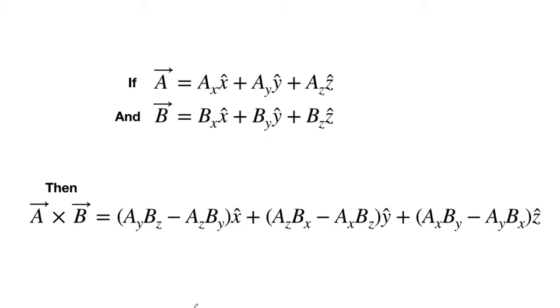Okay, how do we do it in components? Well, if our vector A looks like this and our vector B looks like that, the same way of writing it we've used before,